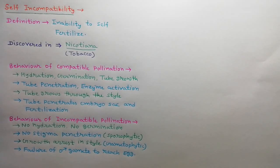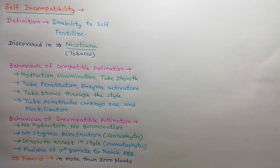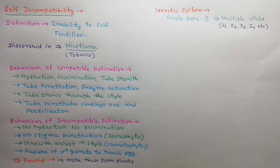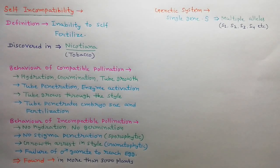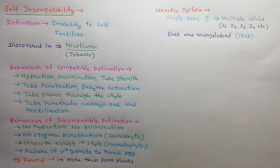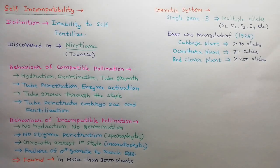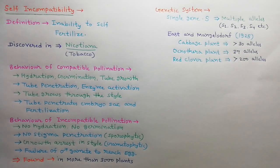Self incompatibility is found in more than 3000 plants. Its genetic system is based on a single locus — the sterility locus or S locus — with multiple alleles such as S1, S2, S3, S4, etc. East and Mangelsdorf in 1925 explained the behavior of S genes. Multiple allelism in some plants is very diverse; for example, in cabbage more than 30 alleles, in Oenothera 37 alleles, and in red clover more than 200 alleles.